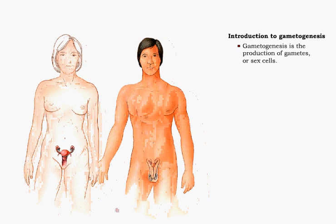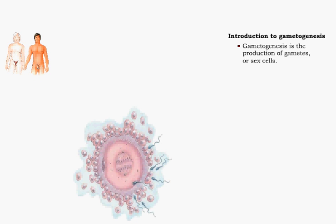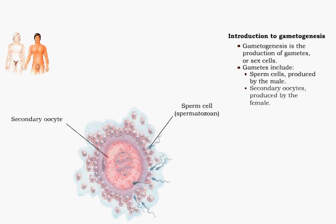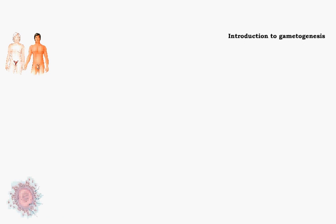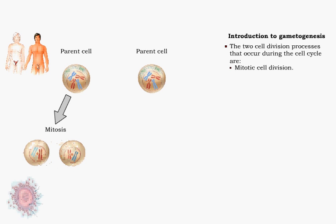Gametogenesis is the production of gametes or sex cells. Gametes include sperm cells produced by the male and secondary oocytes produced by the female. In order to understand how gametes are formed, it is important to understand the cell cycle and the two cell division processes required: mitotic cell division and meiotic cell division.